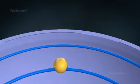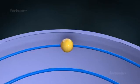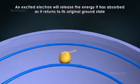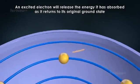Electrons which have moved to a higher energy level will be less stable and in an excited state. An excited electron will release the energy it has absorbed as it returns to its original ground state.